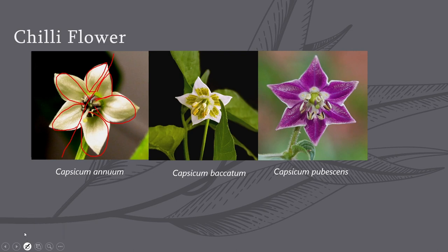Now let us take another example. The second one is Capsicum baccatum. Again, dividing it, you will see that you have got two full petals and one half petal on the upper side, and on the lower side again two full petals and one half petal. So you have divided this flower into two equal parts by passing a plane through the center of the flower. Such type of flowers are called actinomorphic flowers.